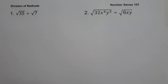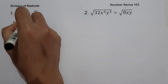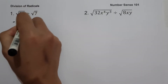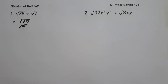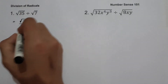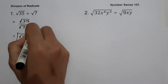On example number one, we have square root of 35 divided by square root of 7. In dividing radicals, always remember we can only divide radicals if we have the same index. Since we have the same index, let us rewrite this in fraction form: square root of 35 over square root of 7. Square root of 35 divided by square root of 7 gives us square root of 5, and this will be our answer.